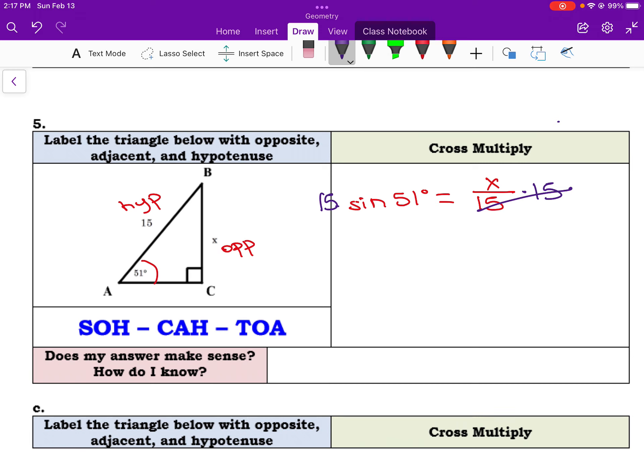Sine of 51, let's see what we get there. That's 0.777. So I have 15 times 0.777 equal to x. So if I multiply that by 15, I get 11.657.